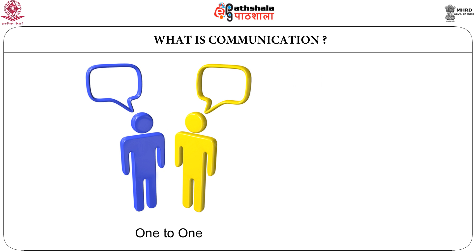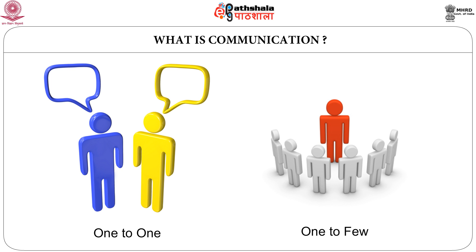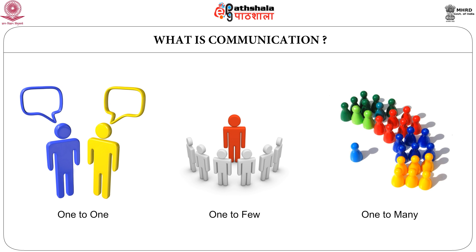The second situation is what we call one-to-few. In this, one person is in communication with a few persons — more than two, twenty, thirty, but not so many that we cannot count them. This is defined as group communication. The third situation is a one-to-many situation, where a person is communicating with many persons simultaneously. There may be more than a hundred, more than a thousand, or even millions. This is called mass communication.